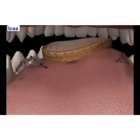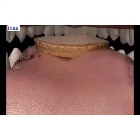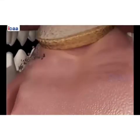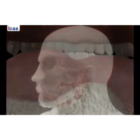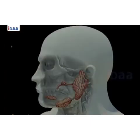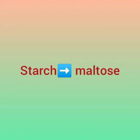Action of saliva: saliva is a slimy liquid that lubricates the ground food and converts it into mush. Here is the picture of salivary glands present in the mouth, which produce saliva and convert starch into maltose through the help of the amylase enzyme.